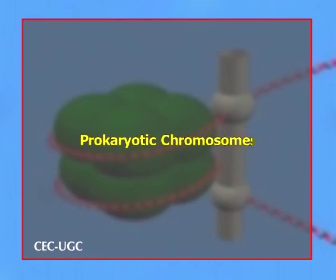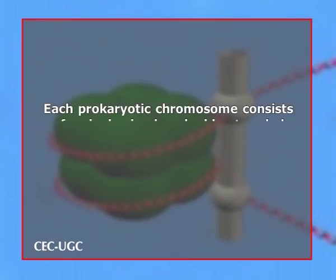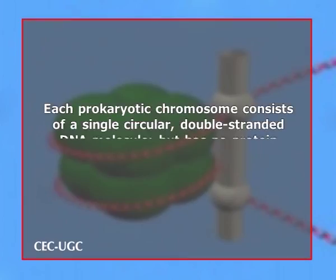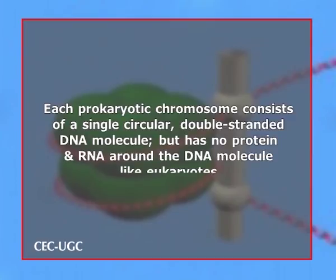Prokaryotic chromosomes usually consist of a single, circular chromosome in each of the nucleoids. Each prokaryotic chromosome consists of a single, circular, double-stranded DNA molecule, but has no protein and RNA around the DNA molecule like eukaryotes. Different prokaryotic species have different sizes of chromosome.